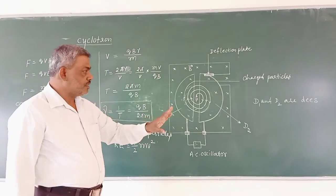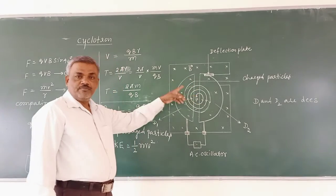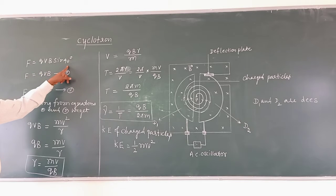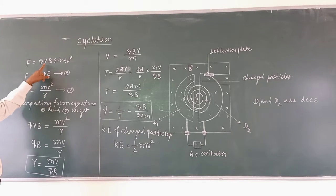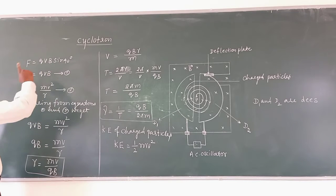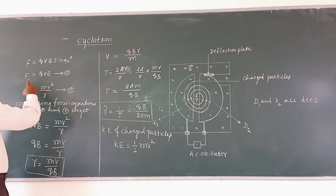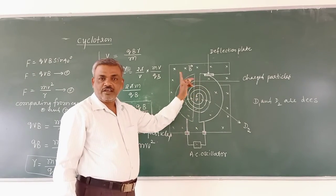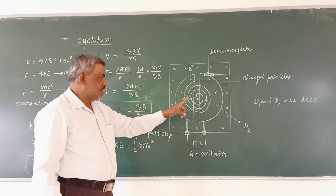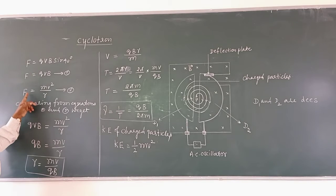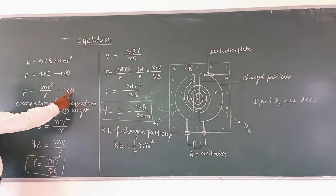The force experienced by charged particles moving perpendicular to the magnetic field is given by F = qvB sin90°. Since sin90° = 1, F = qvB — equation 1. If a charged particle moves along a circular path, the force must be directed towards the center — that is the centripetal force. The centripetal force equals mv²/R — equation 2.